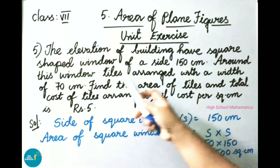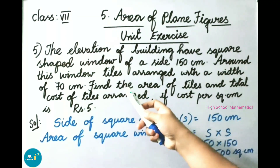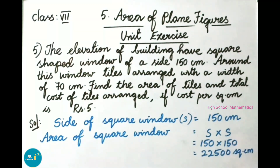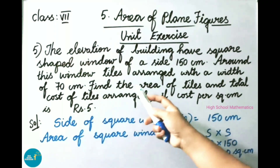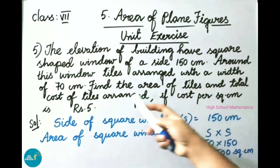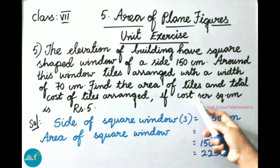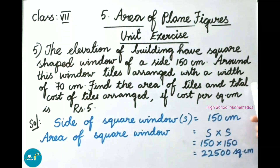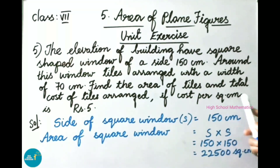The elevation of a building has a square shaped window of side 150 cm. Around this window, tiles are arranged with a width of 70 cm. Find the area of tiles and total cost of tiles arranged if the cost per square cm is 5 rupees. Let us see the solution.